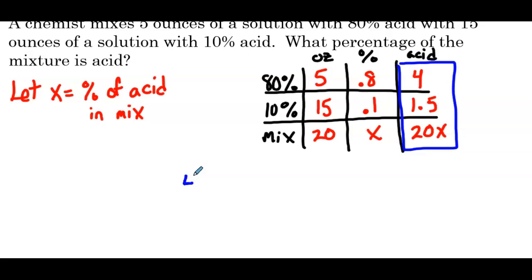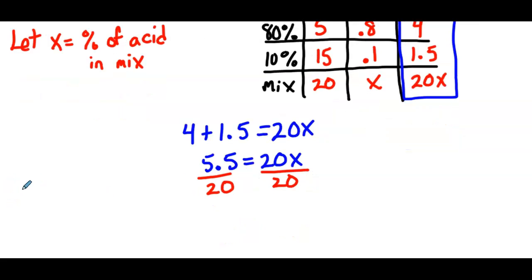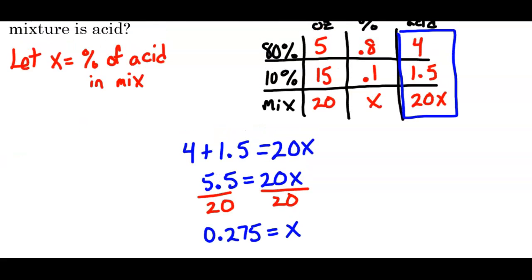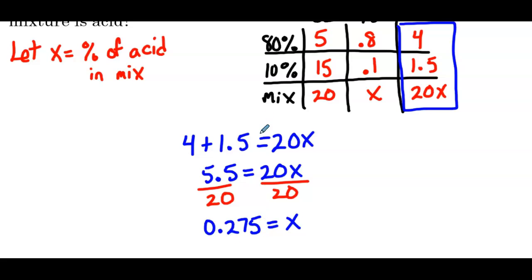So our equation is 4 plus 1.5 equals 20x. So we have 5.5 equals 20x. We can divide both sides by 20. And that's going to give us, typing in, 5.5 divided by 20. That's going to give us 0.275 as x. Now, the question wants what percentage. So if the decimal is 0.275, that means that's 27.5% acid in our mixture. So there's our first example.